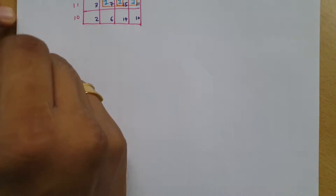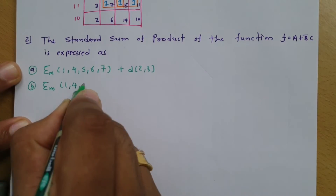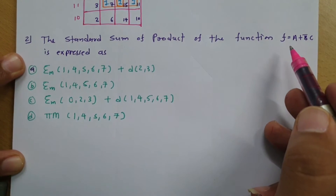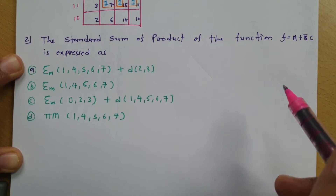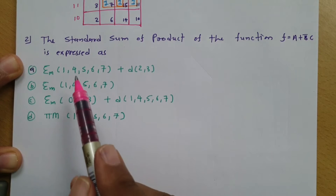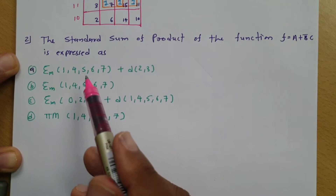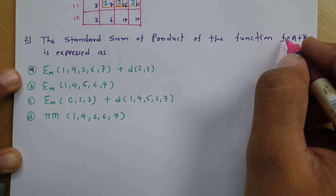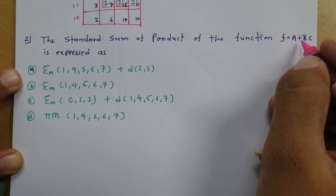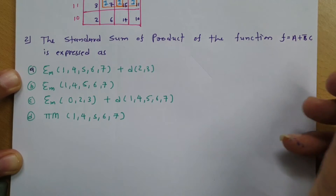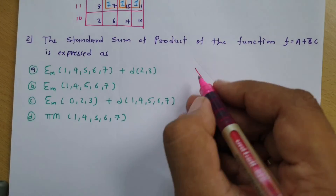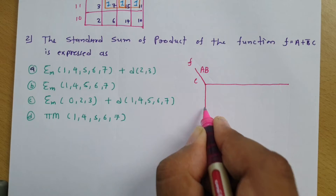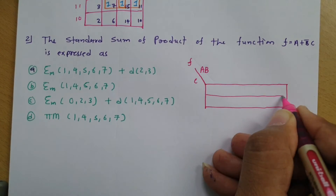Now let us solve the second question. In this question, the standard sum of products function f = A + B'C is expressed in terms of minterms plus don't cares, and we need to identify which option is correct. First I will make a KMAP based on this function. Since f is a function of A, B, and C, this is a three-variable KMAP.